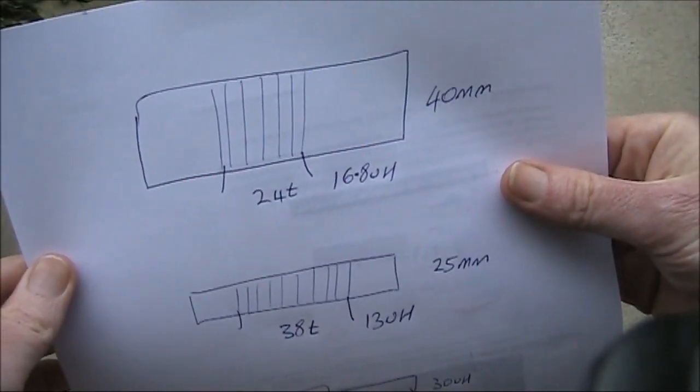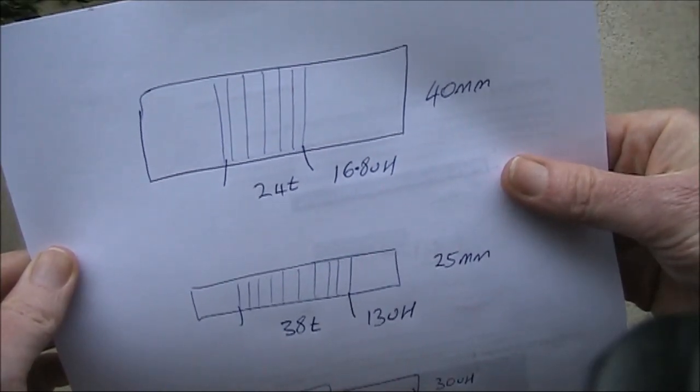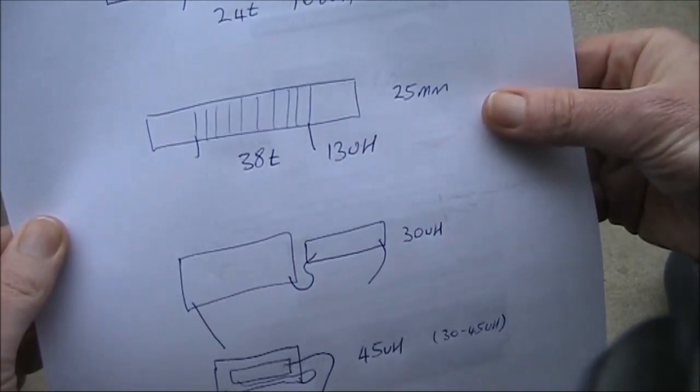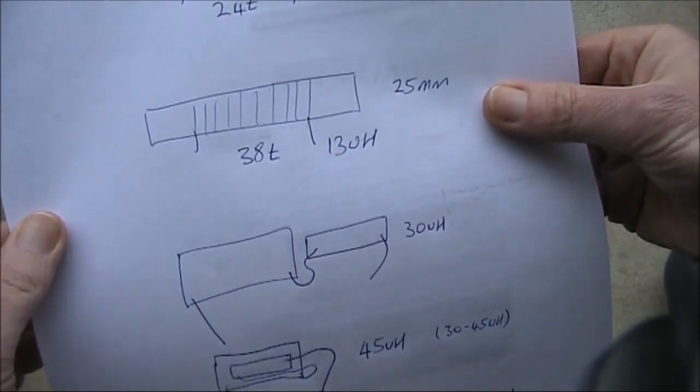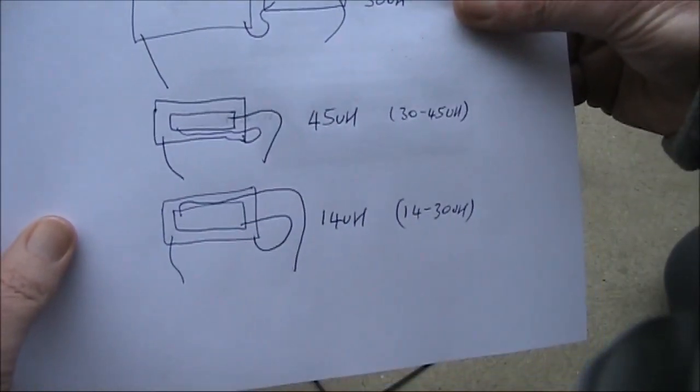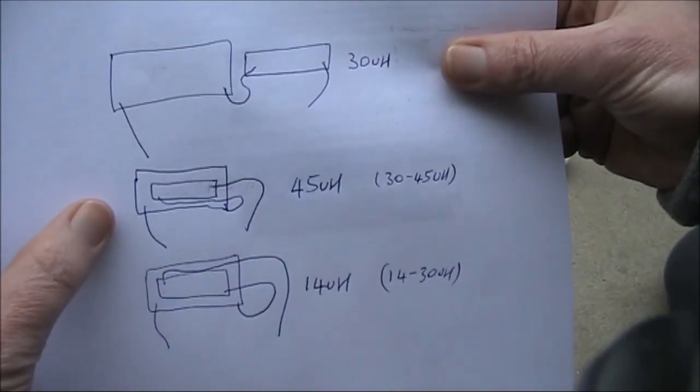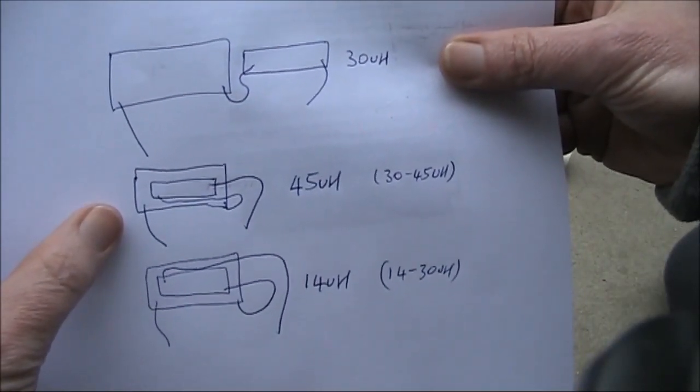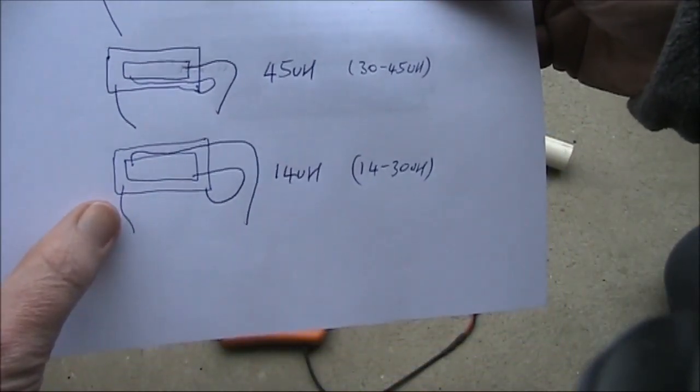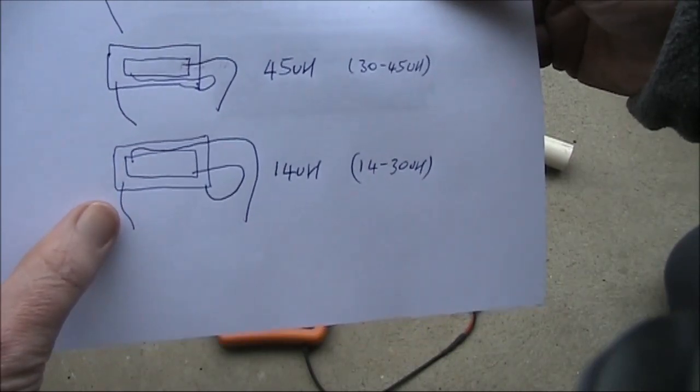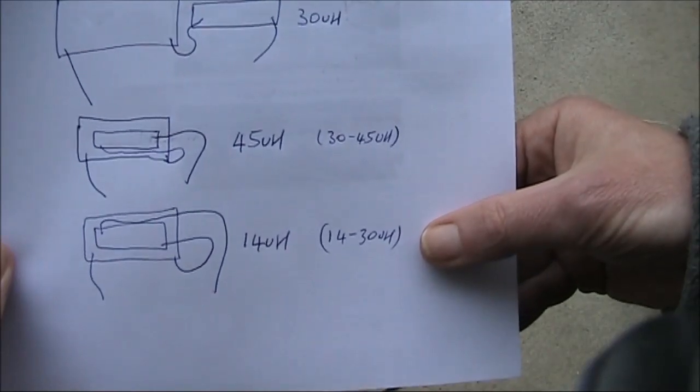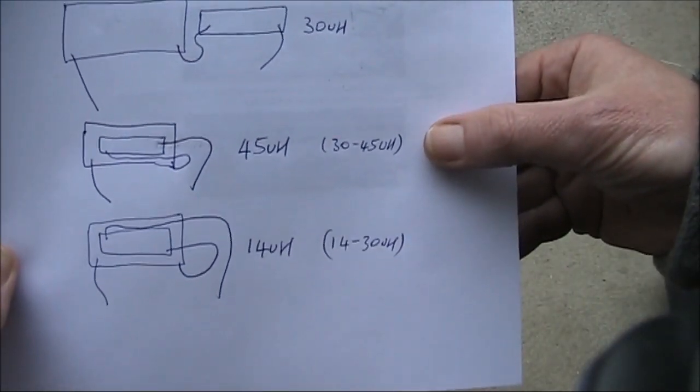Just to recap, this is the first coil, 24 turns on 40mm of pipe. This is the second smaller coil, 38 turns on 25mm. Here is where it's 30 microhenry. This is where it's 45, and you can vary between 30 and 45. And here's where you change the orientation to get 14 as a minimum, but you can go up to 30. So with this arrangement, you have a variable inductor going from 14 up to 45 microhenry.